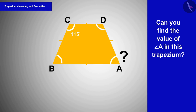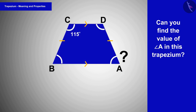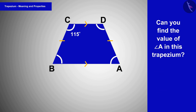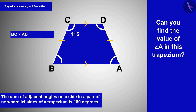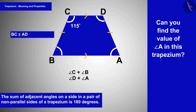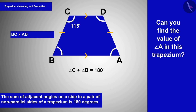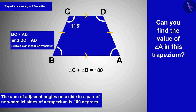Let us see another example — can you find the value of angle A in this trapezium? Pause the video and try. By trapezium properties, the sum of two adjacent angles formed on each non-parallel side of any trapezium is 180 degrees. We can see from the question that the given trapezium is an isosceles trapezium.